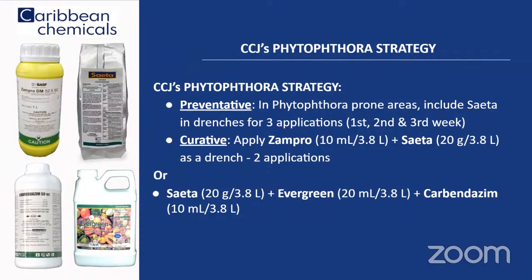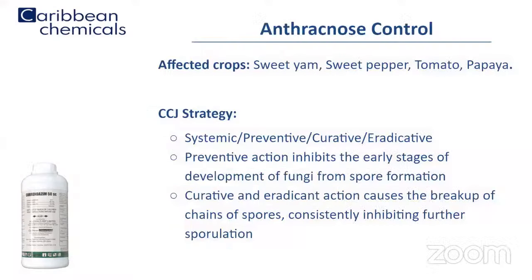Another approach is to use Saida plus Evergreen and Carbendazim. This gives added protection and the added benefit of stimulating — not just controlling those hard-to-control issues — but at the same time stimulating your soil and giving the plant the ability to continue to grow and develop. You can apply these both as drench as well as foliar.